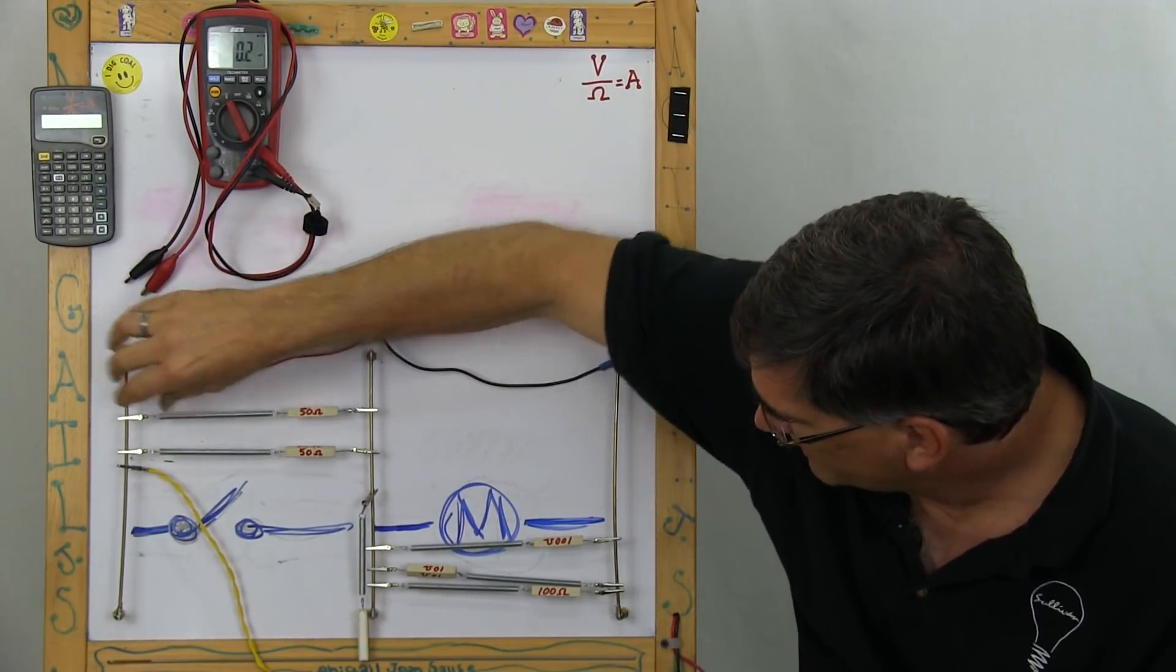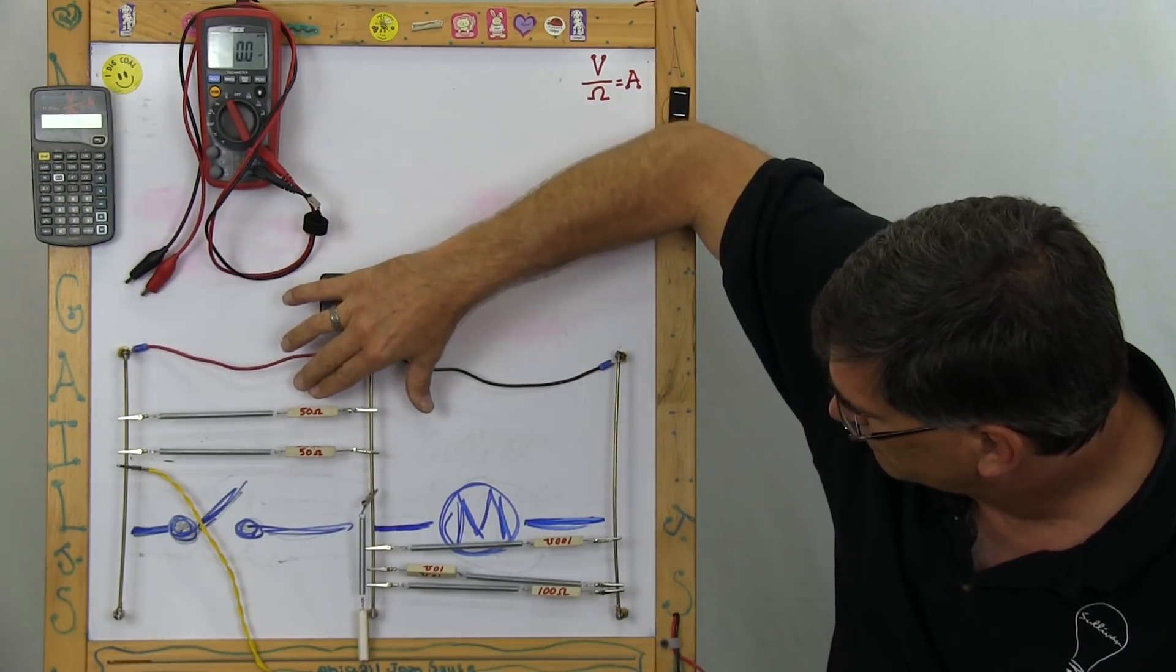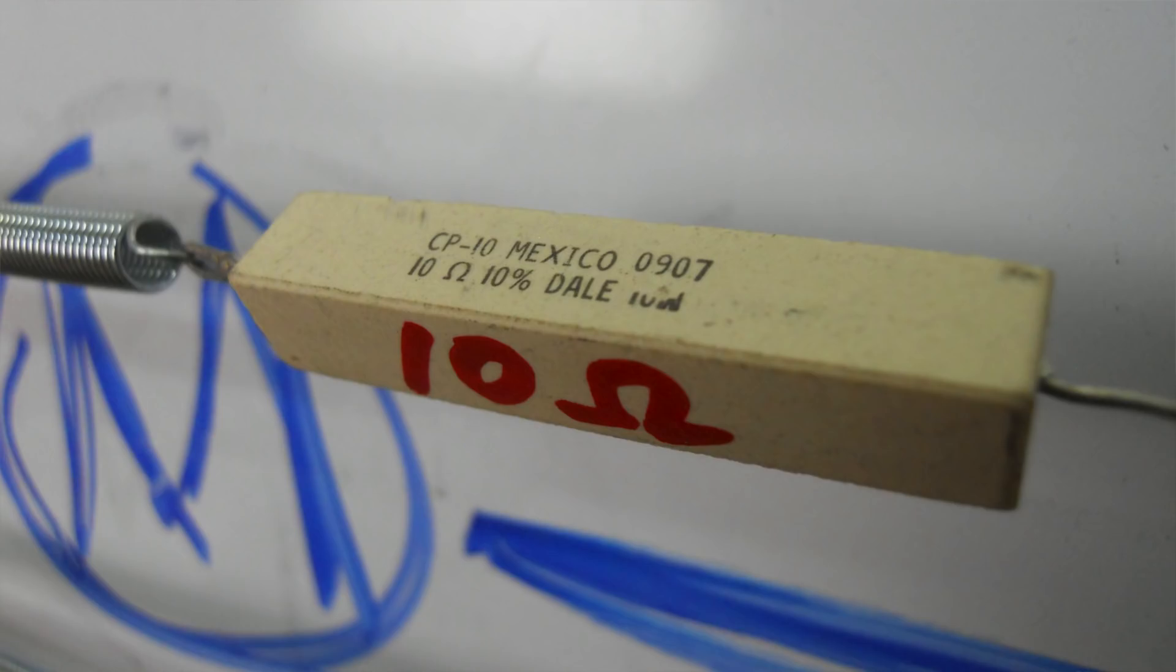These are brazing rods, and I simply attached them to some brass screws, soldered them in. And these are Radio Shack resistors, 10, 50, and 100.